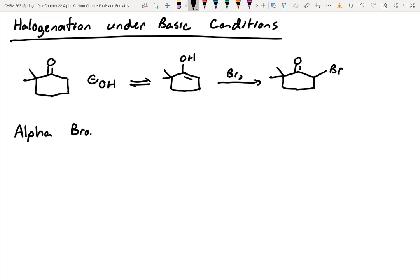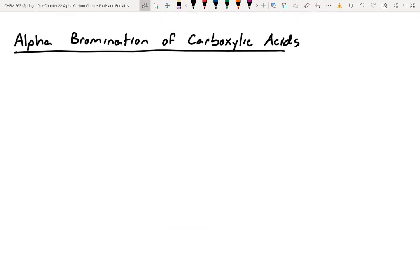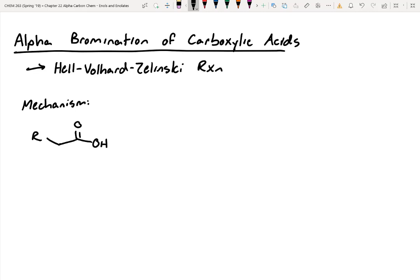So this is alpha bromination of carboxylic acids. The fancy name for this is the Hell-Volhard-Zelinski reaction. If you really want to impress another chemist, just throw out this name. All right, so let's take a look at the mechanism.